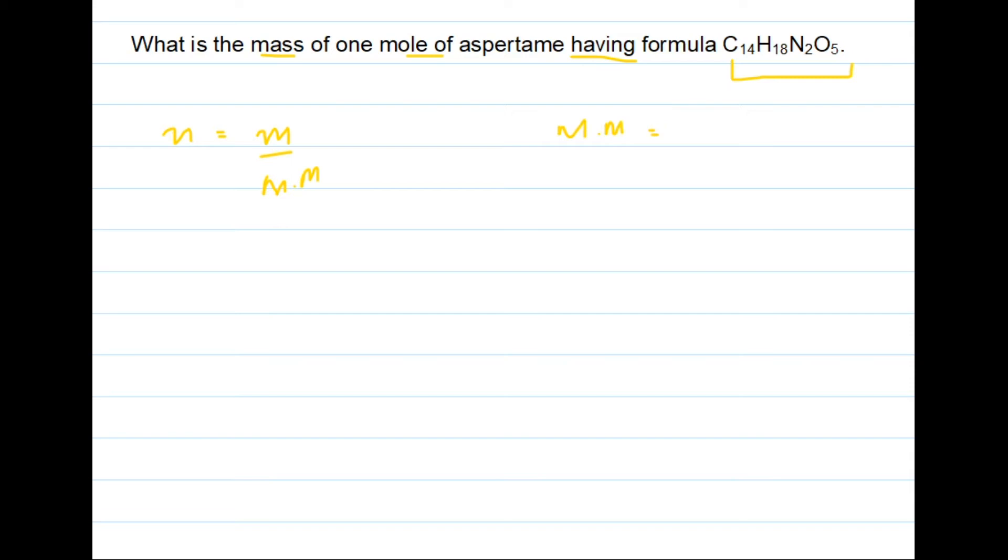Molecular mass can be found with the help of atomic masses of the elements. In the molecular formula we have 14 carbon atoms, and the atomic mass for one carbon atom is 12, so we multiply 14 with 12.